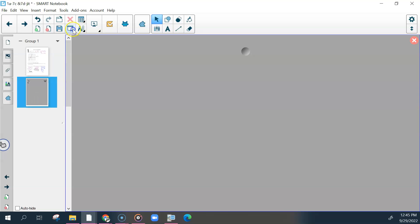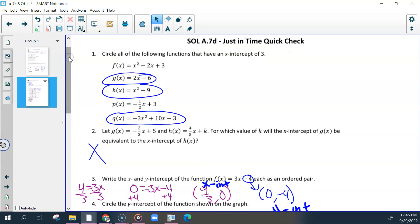On 7d, for number one, when you have something like this, I would say either use Desmos, use your calculator, start putting these in individually, one at a time, and see which of these go through your x-axis at 3. Whichever ones do go through your x-axis at 3 would be your answer, so these three.